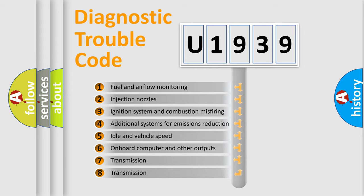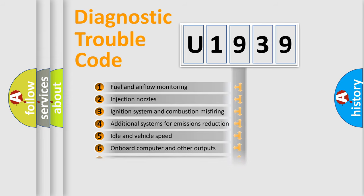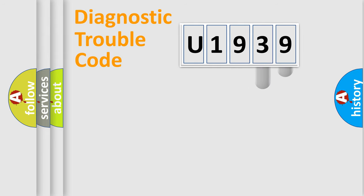The third character specifies a subset of errors. The distribution shown is valid only for the standardized DTC code. Only the last two characters define the specific fault of the group.